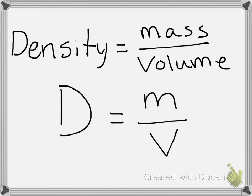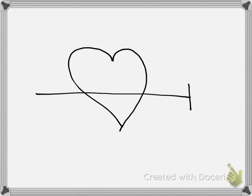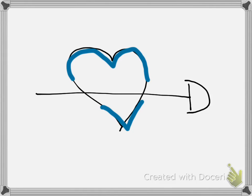Once we have that recorded, there are a couple different things we can do to help us remember this formula. So density equals love — if we have a heart and the heart gets shot with an arrow, here's your mass, here's your volume, equals your density. That's just a little cute way to help you remember your density formula.